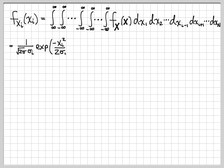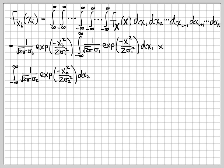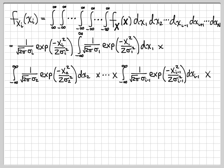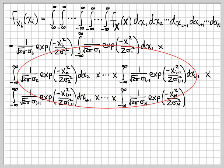We're going to integrate out all the dimensions we don't want to get the marginal density function. I can pull out the i-th part of this function because it's a constant with respect to all these integrals. What I'm left with are a whole bunch of integrals: an integral over x_1 multiplied by the integral over x_2, and I keep going until I get to i minus 1, then multiply by the integral over the i plus 1 dimension, continuing all the way up to the n-th integral. We've explicitly written out all n minus 1 integrals that we need to do.